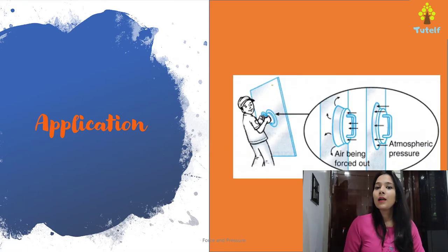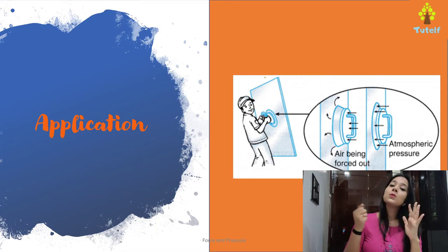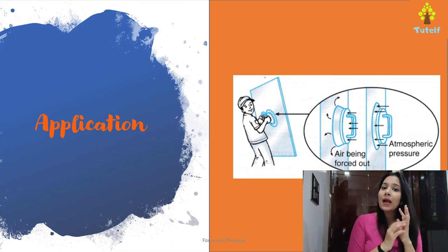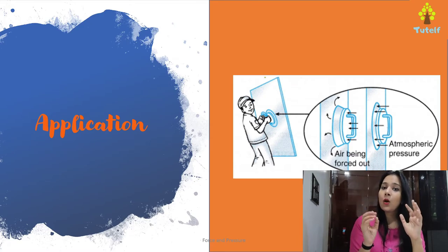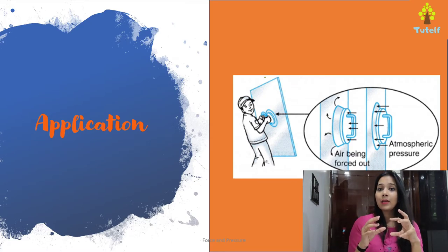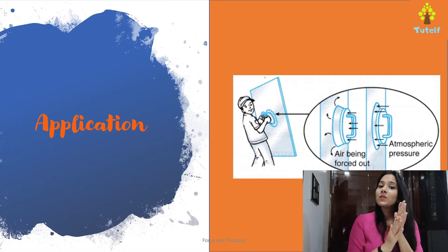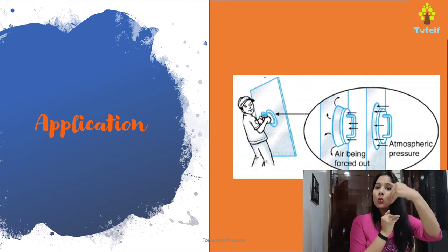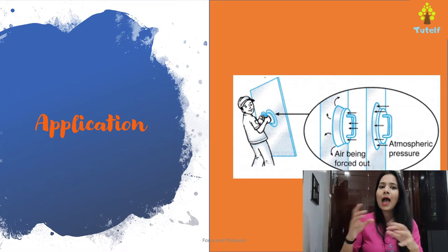You must have used a sucker — we use it to hang things and it is used in games also. To make the sucker stick on a wall, we first push it and then when you release it, it stays stuck. When you push it, you remove all the particles between the sucker and the wall. As soon as they are removed, it creates an area of low pressure. Since the atmospheric pressure outside is high, it applies force from all directions, and thus the sucker is stuck on the wall.